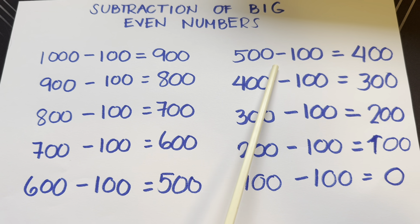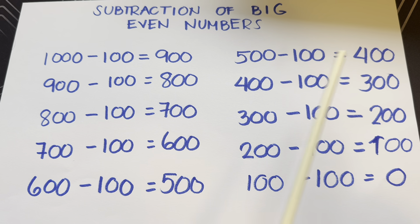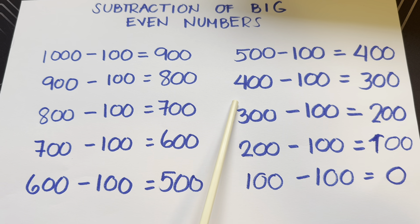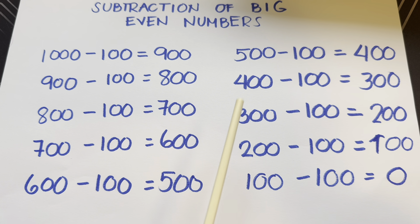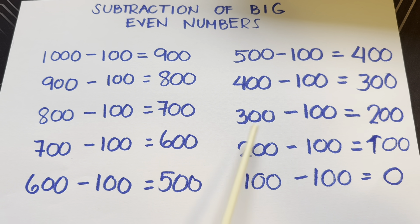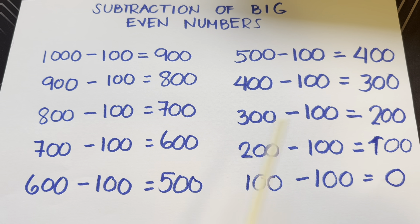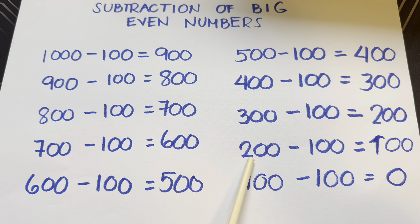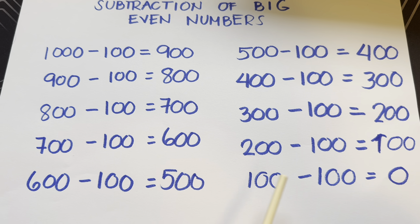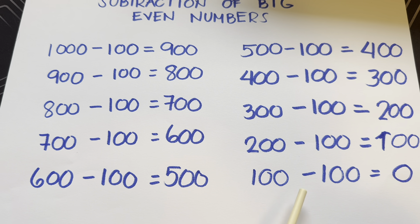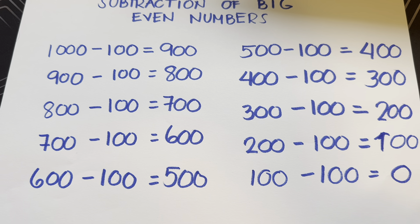500 minus 100 is equals to 400. 400 minus 100 is equals to 300. 300 minus 100 is equals to 200. 200 minus 100 is equals to 100. And lastly, 100 minus 100 is equals to 0.